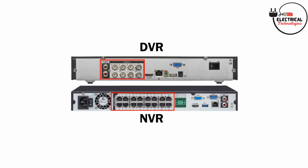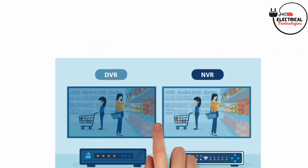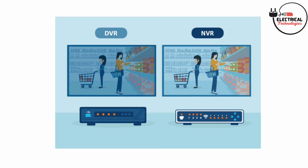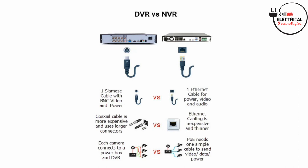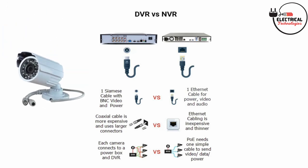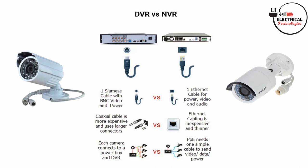NVR versus DVR systems: what is the difference? Both NVR and DVR systems are responsible for video recording, however they differ in how they record the footage. The DVR system processes data at the recorder, while the NVR system encrypts and processes data at the camera before sending it to the recorder for storage and remote viewing. Both systems handle data differently, thus they need different types of cameras. Most DVRs are used with analog cameras, while NVRs are used with IP cameras.